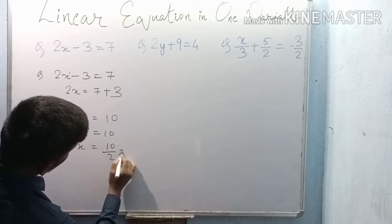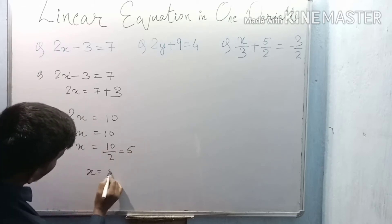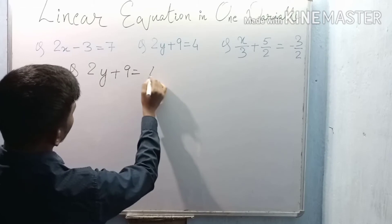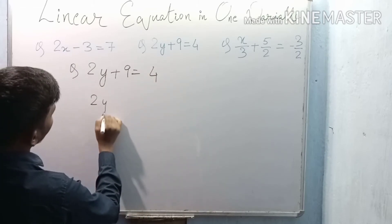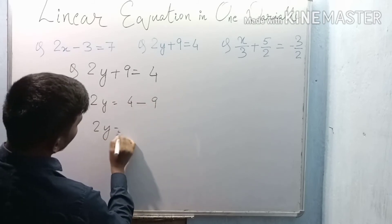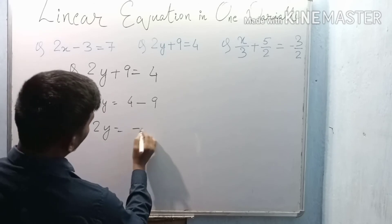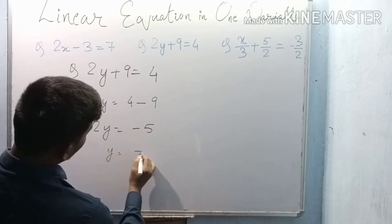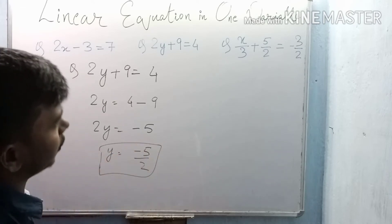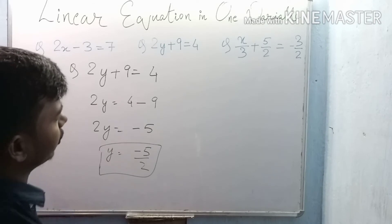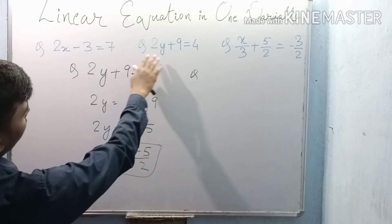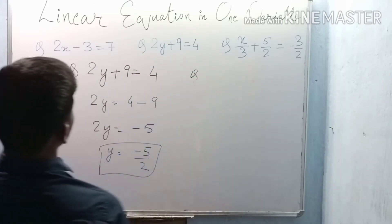The next question is 2y plus 9 equals 4. Solving similarly: 2y equals 4 minus 9, so 2y equals minus 5, therefore y equals minus 5 by 2. This is the answer. Very simple — this is one of the easiest NCERT example questions on linear equations in one variable.